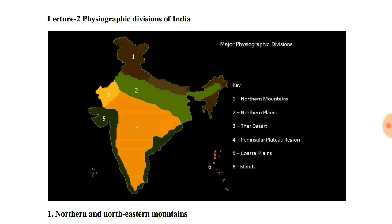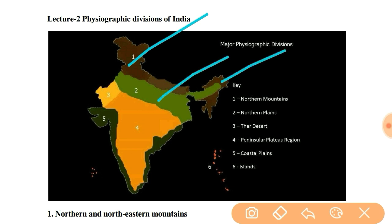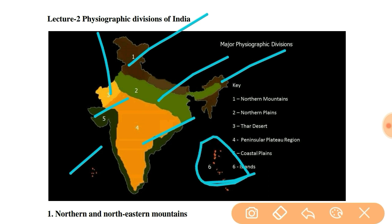Let's start with today's discussion. The Indian landmass is divided into six physiographic divisions, which includes: Northern and Northeastern mountains, Northern Plains, then Thar Desert in Rajasthan, then the Peninsular Plateau region, then coastal plains, then islands — which means Lakshadweep and Andaman and Nicobar Islands. In this video, I am going to explain about Northern and Northeastern mountains.